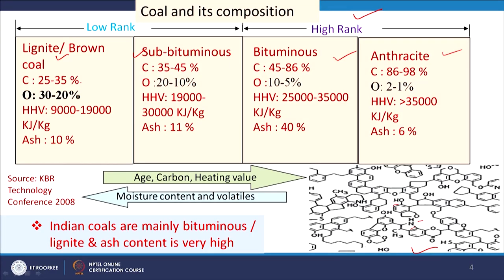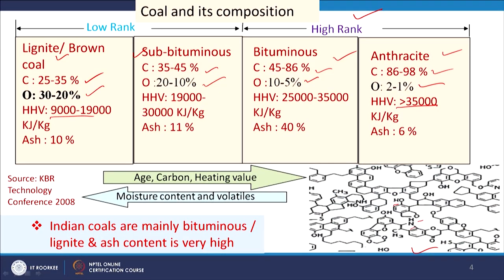For lignite, carbon content is 25–35%; for sub-bituminous, 35–45%; bituminous 45–86%; and anthracite 86–98%. Oxygen is 30–20% for lignite, 20–10% for sub-bituminous, 10–5% for bituminous, and 2–1% for anthracite. Anthracite has the highest heating value at over 35,000 kJ/kg, whereas lignite is the lowest at 9,000–19,000 kJ/kg. It is important to note that bituminous coal available in India has very high ash content, which is a major issue requiring indigenously developed techniques for the utilization of Indian coal.